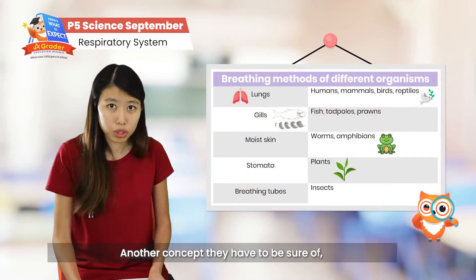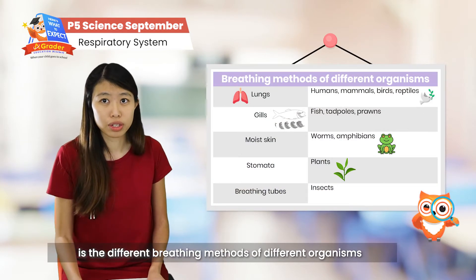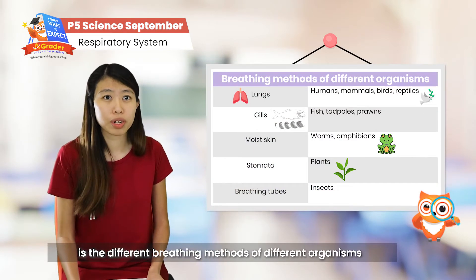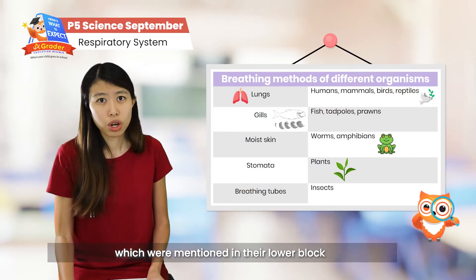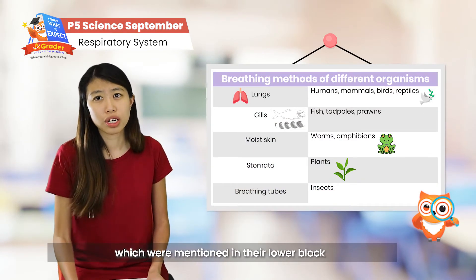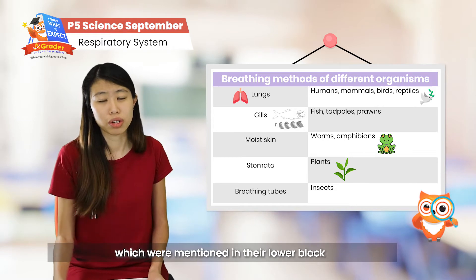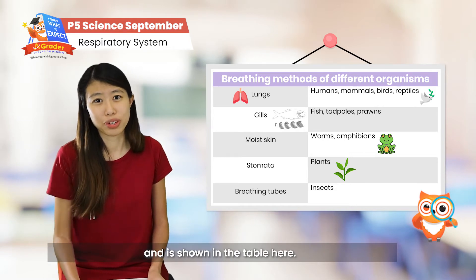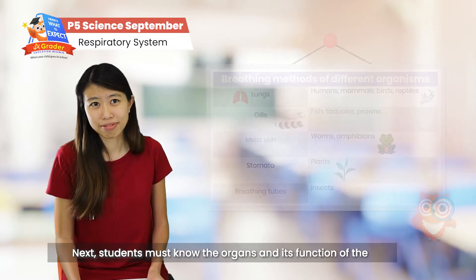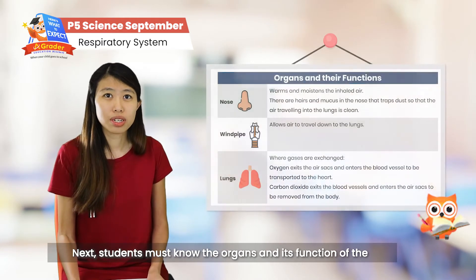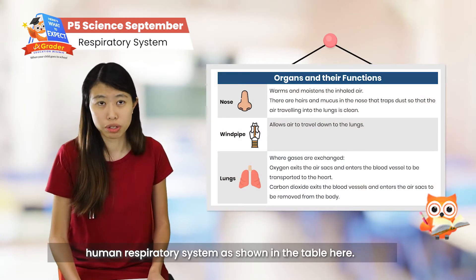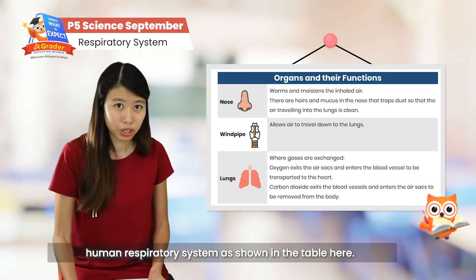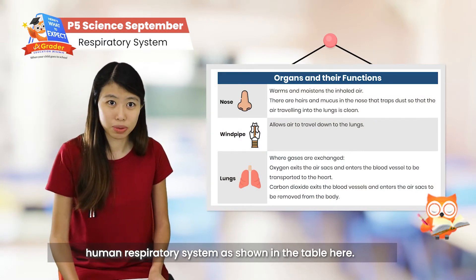Another concept they have to be sure of is the different breathing methods of different organisms, which were mentioned in their lower level work, as shown in this table here. Next, students also have to know the organs and functions of the human respiratory system, shown in this table here as well.